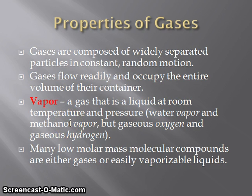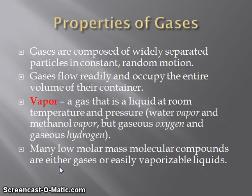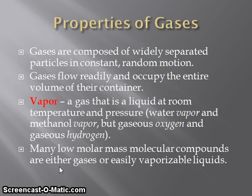Methanol is an alcohol which would be liquid at room temperature but can fairly easily pass into the gas state, so we call it methanol vapor. Substances which are typically gases, like oxygen and hydrogen, are referred to as gaseous elements. Many low molar mass molecular compounds exist as gases or as liquids which can be easily vaporized. Whether a compound is liquid or gas at room temperature depends on how well particles stick together. Water exhibits very strong hydrogen bonding, so it exists as a liquid despite its low molar mass. Methane, CH4, has very weak intermolecular attractions and so exists normally in the gas state.